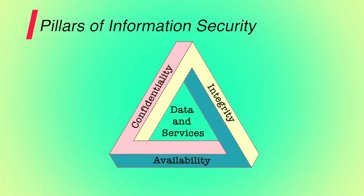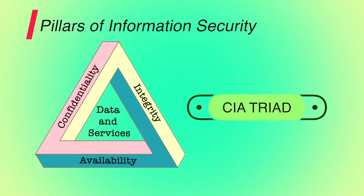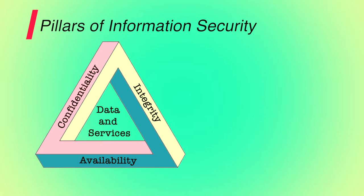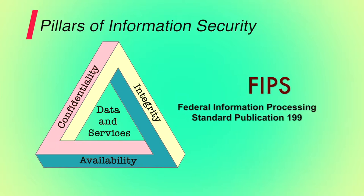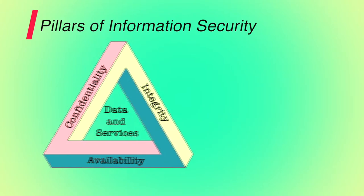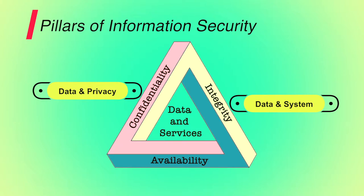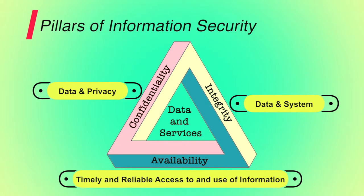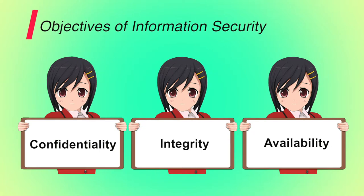What are the pillars of information security? Information security rests on three main pillars: confidentiality, integrity and availability. These three pillars form what is often referred to as the CIA triad. FIPS PUB 199 provides a useful characterization of these three objectives in terms of requirements and the definition of a loss of security in each category. Confidentiality covers both data confidentiality and privacy. Integrity covers both data and system integrity. And availability ensures timely and reliable access to and use of information.